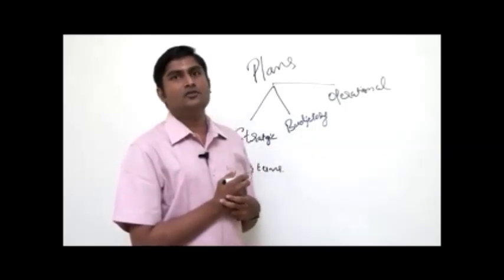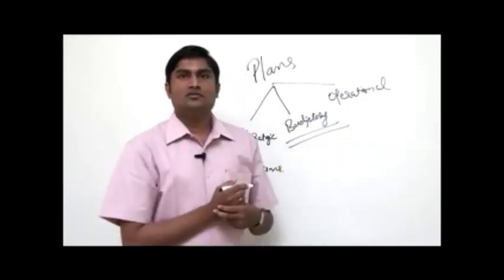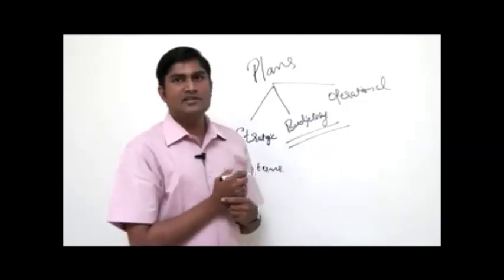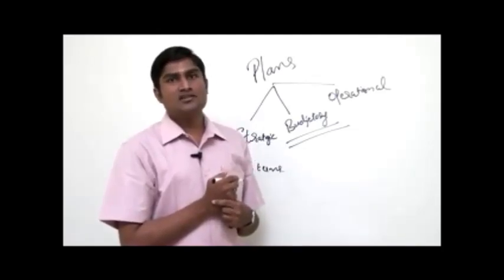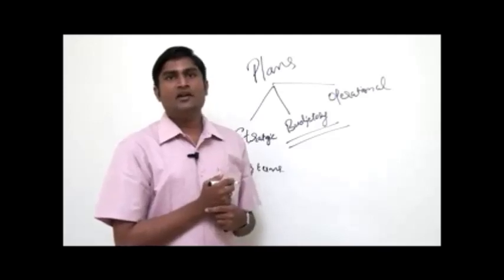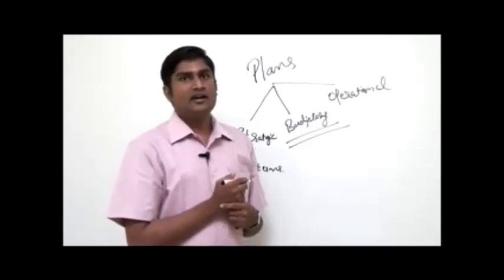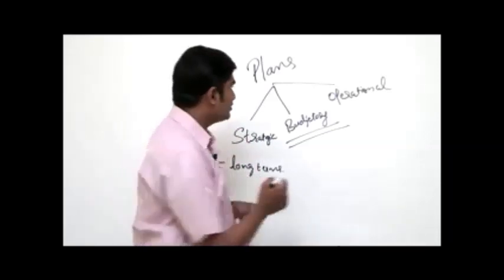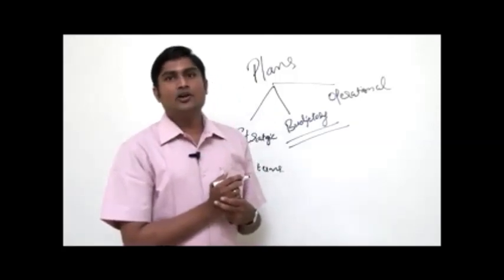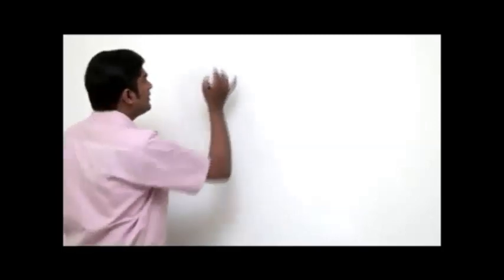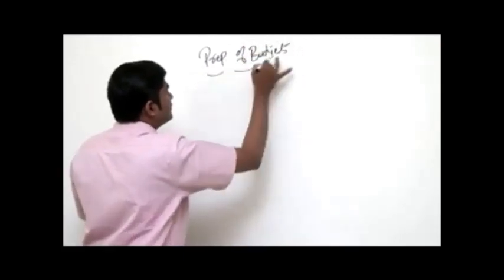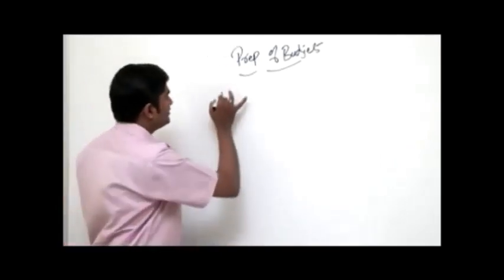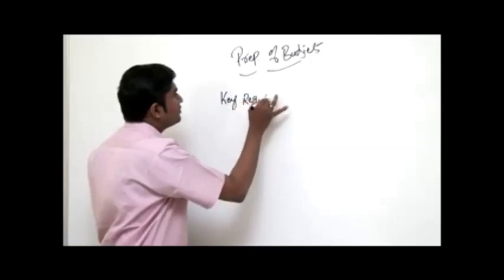We are now moving on to the chapter on budgetary control. We have already seen what budgets are in the IPCC syllabus — production budgets, sales budgets, raw material acquisition budget, master budget, flexible budget, zero-based budget, etc. In the final scenario we go in depth into the subject. Here we will focus on budgetary control and look into the key requirements — specifically how budgets are being prepared.